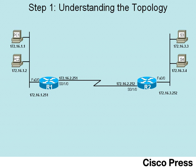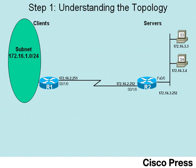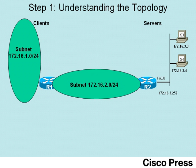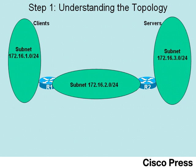On the left, we've got two PCs — PC1 and PC2 — and those will be our clients in this particular lab. Over on the right, we have two PCs labeled S3 and S4, meaning server 3 and server 4, so that'll be our server farm. In this design we have three subnets: 172.16.1.0 on the left, 2.0 in the middle, and 3.0 on the right, all three using a simple /24 mask.